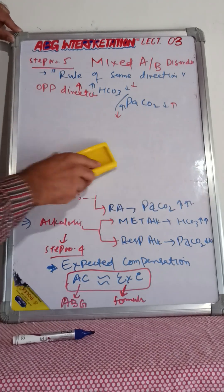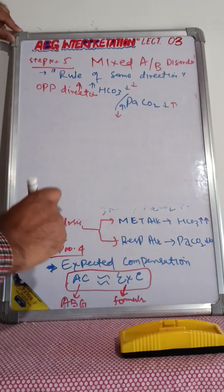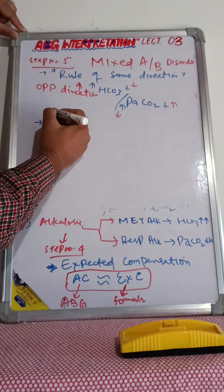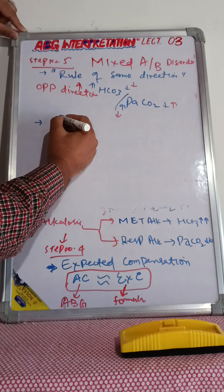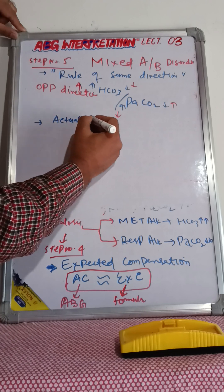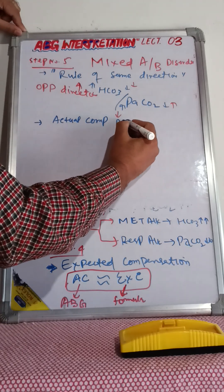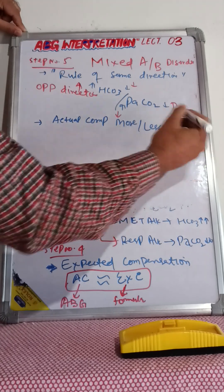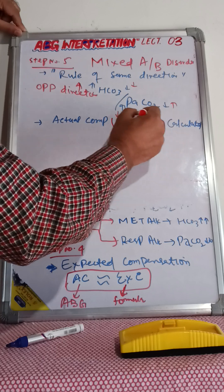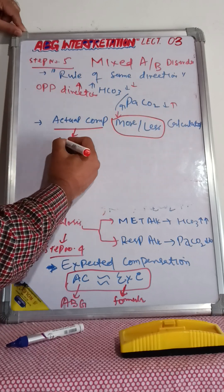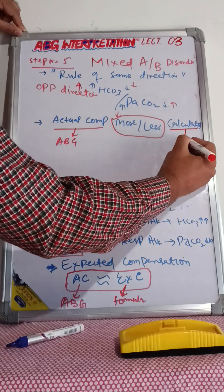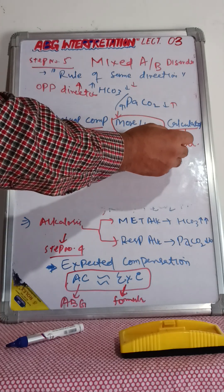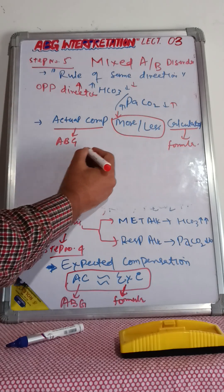The second sub-step of step five: after checking the rule of same direction, check the compensation. If the actual compensation on the ABG is more or less than the compensation calculated by the formula, that again indicates a mixed disorder.